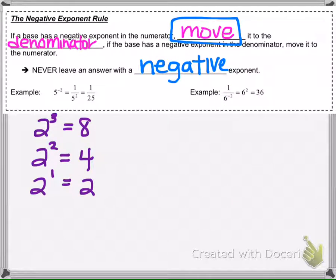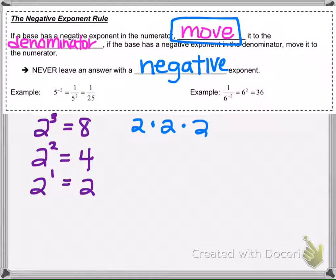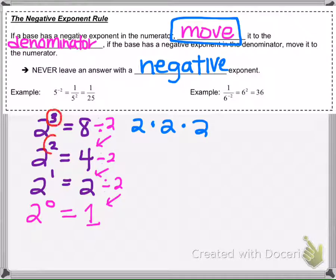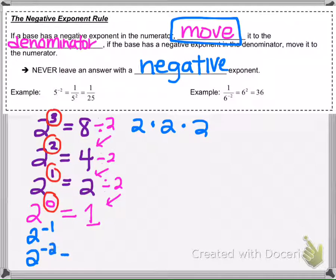I want to make sure we understand why we move the exponents. We know that 2 to the 3rd power, when the exponent's positive, tells us how many of that base to multiply. We talked about in one of the other videos what a zero exponent means. There's a pattern here: if I divide by the base, I get the next number in the pattern. So we know that 2 to the 0 equals 1. Now I'm just dropping the exponent by 1 each time: 3, 2, 1, 0. So 0 minus 1 puts us at 2 to the negative 1st power, and then dropping by 1 again gives 2 to the negative 2nd power.